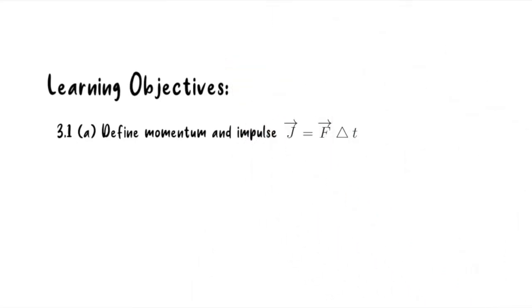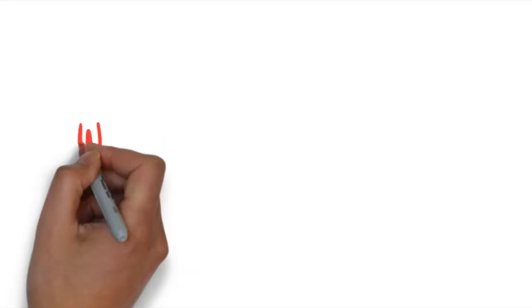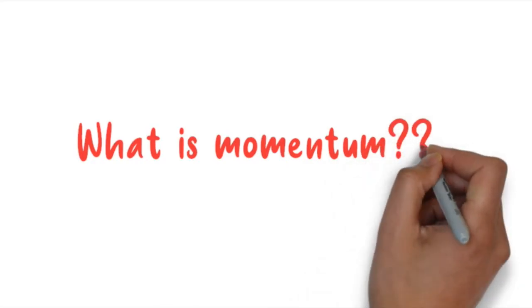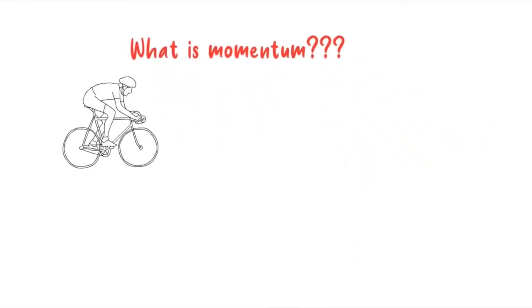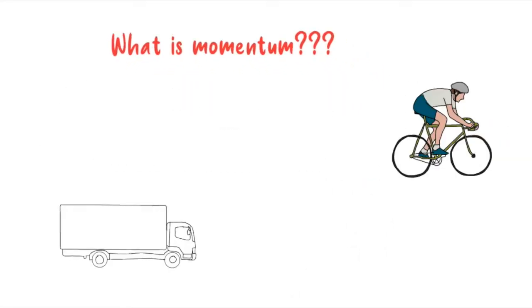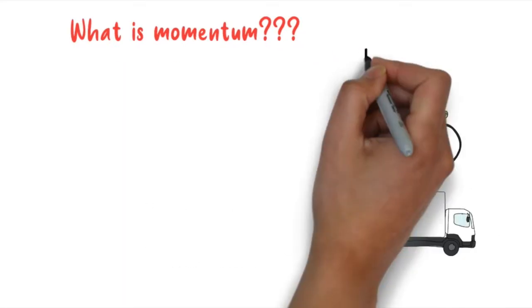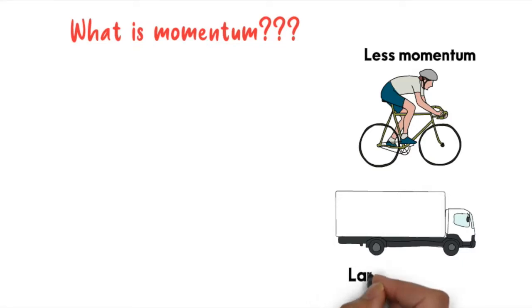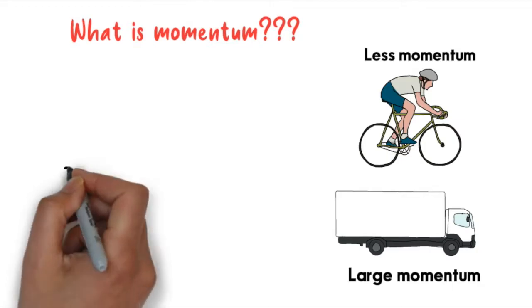So what is momentum? First, look at the bicycle and the truck. The bicycle has less momentum while the truck has large momentum. The reason behind this is that the truck is more massive than a bicycle.